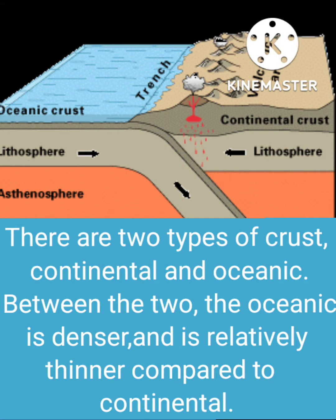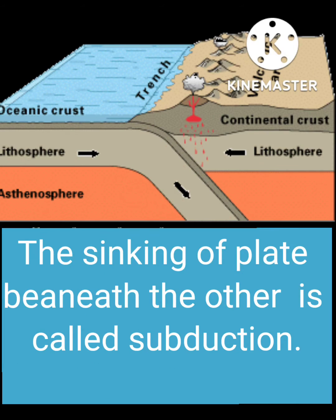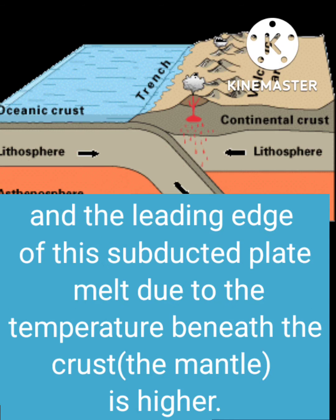There are two types of crust: continental and oceanic. Between the two, the oceanic is denser and is relatively thinner compared to the continental. When these two plates collide, the oceanic plate bends downward because it is denser than the continental plate. The sinking of one plate beneath the other is called subduction. The leading edge of this subducted plate melts due to the higher temperature in the mantle beneath the crust.